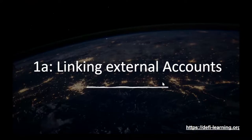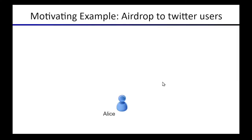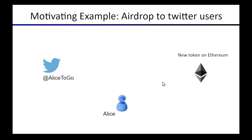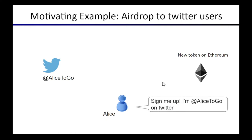To start with, we're going to talk about the problem of linking external accounts into a DeFi or smart contract application. The simplest example is the idea of making an airdrop of some newly created tokens, where the goal is that anyone with a Twitter account is able to go and claim some allocation of this new token. So here we have Alice — her Twitter account is Alice2go — and what she wants to do is say to this smart contract or decentralized application: my Twitter account is Alice2go, so go ahead and give me my airdropped portion of tokens.